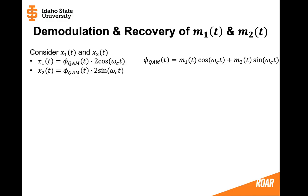X1 and X2 are signals where we have demodulated the QAM signal by multiplying by either a cosine wave or a sine wave.